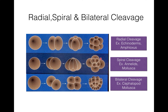In bilateral cleavage, the first two cleavages are meridional in the same plane, and the third cleavage is transverse, so the embryo shows bilateral symmetry. The blastomeres on one side are smaller and on the other side are larger. Bilateral cleavage is present in tunicates, cephalochordates like amphioxus, and cephalopod molluscs.